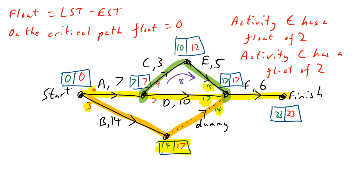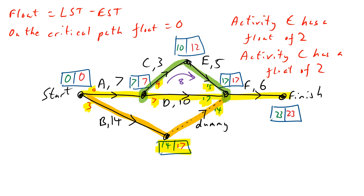That's what we mean by float — some of these side loops can be delayed without affecting the whole critical path. Though technically you should be drawing a second box here to catch that float issue with activity C, which the books don't explain properly at all. If you think more about the loops and look at the differences in the numbers, you can see the float more clearly.